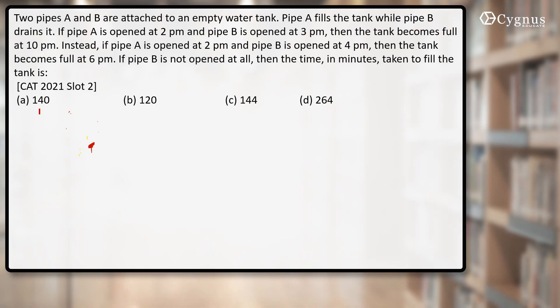What's not given in the question is that the filler pipe will take how much time to fill the tank completely, and the exhaust pipe will take how much time to empty the whole tank completely. Let's assume that pipe A can fill the whole tank in x hours. Similarly, pipe B, which is an empty pipe, takes y hours to empty the whole tank.